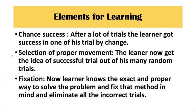The next element is chance and success. A child does many trials in the learning process and gets success in one of them by chance. For example, if we are given a puzzle to solve, the child tries many random attempts and gets success in one of them by chance — then they know that is the exact accurate response.